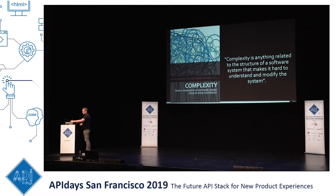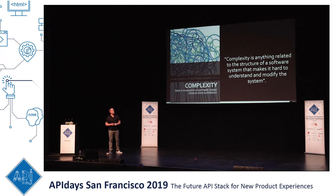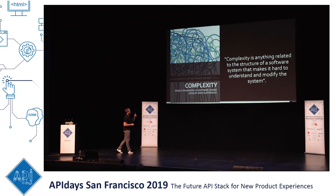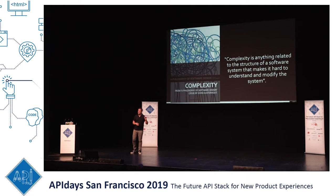Complexity is an interesting thing, and we should all start with defining what complexity is before we get too far into the weeds. A wonderful book came out last year by John Osterhout that described complexity as anything related to the structure of a software system that makes it hard to understand and modify that system.